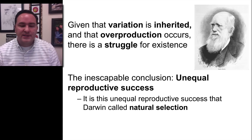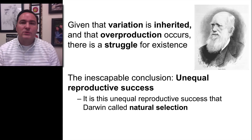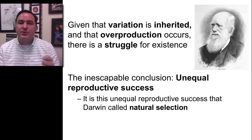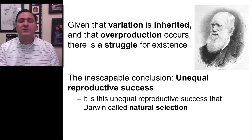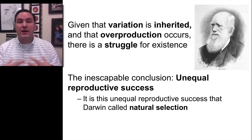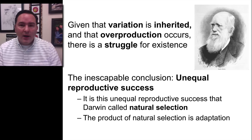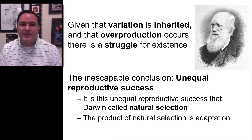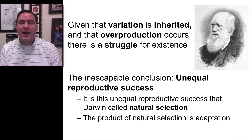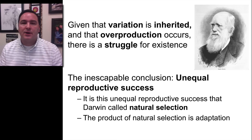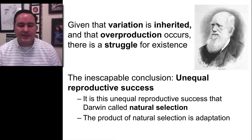This unequal reproductive success was what Darwin called natural selection, because it's nature that is doing the selecting based on whatever those individuals are in the current environment. The product of natural selection is adaptation, so that's why we talk about adaptations happening — because adaptations occur due to natural selection.